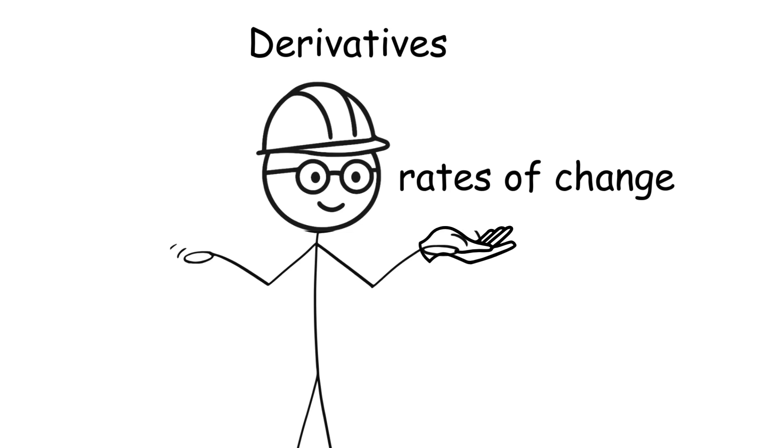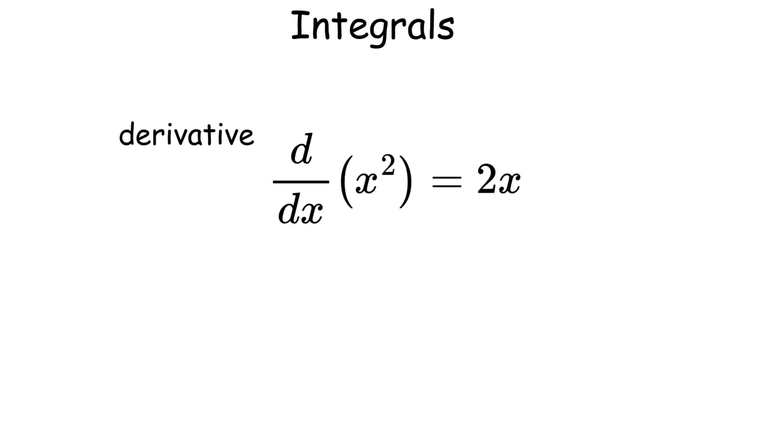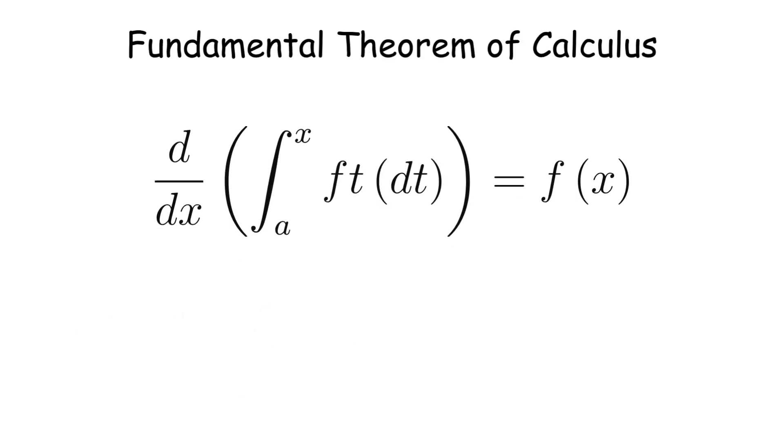But derivatives only give us rates of change. To find accumulated quantities, we need integrals. An integral is essentially the reverse of a derivative. It's the antiderivative. The fundamental theorem of calculus connects these two operations and tells us that integration and differentiation are inverse processes.